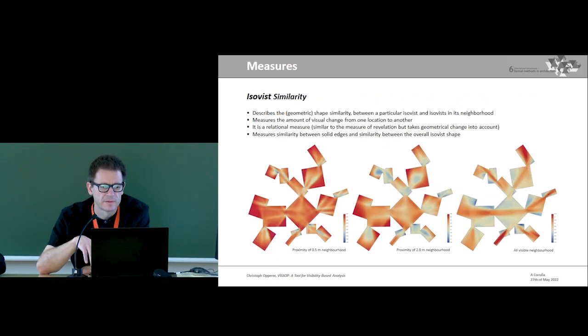That's a similar measure. It's a similarity measure. And it describes the shape similarity or rather the difference between an ISOVIST and ISOVIST in its neighborhood. In other words, it measures the amount of visual change when you move from one space to another. It is a relational measure and it's based on the shape-based descriptor by Belonghi.